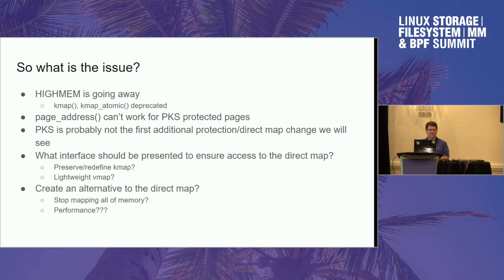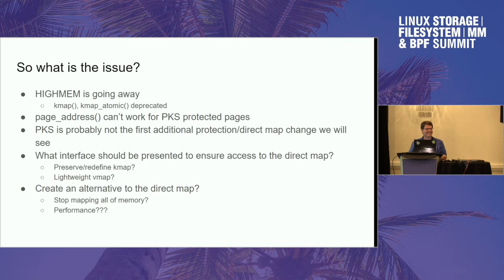As a pretty heavy user of kmap, personally I don't care — if you want to change the interface and change how we do mappings, go for it. Just tell me what new function I'm supposed to use and I'll go convert it. Really the only time we care about it is to write to our metadata pages — we have our helpers that kmap the page, do the writes and updates, then unmap. If I've got to call something else or allocate differently, that is the least interesting part of BtrFS. I'll just go change some functions and make it work. Also, every couple of years we write a debugging patch where we intentionally set pages read-only to figure out who is changing them without our knowledge. PKS would make that a lot easier — something we could actually leave in the kernel as a mount option or config option.